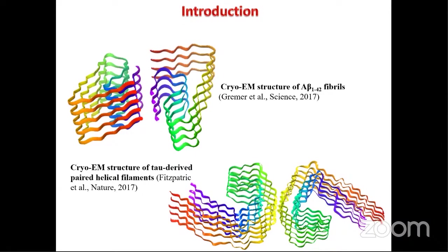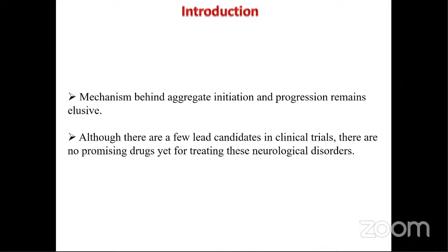Up until 2017, we were not sure how these plaques and tangles looked like. Thanks to cryo-electron microscopy, two separate groups published work on how the amyloid beta plaque looks — a stack of amyloid beta-42 peptide fibrils — and another figure derived from cryo-EM shows hyperphosphorylated tau tangles. This discovery gave us a lot of insights into the molecular arrangement of these aggregates.